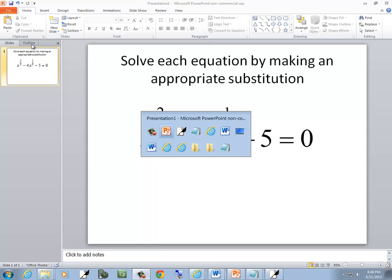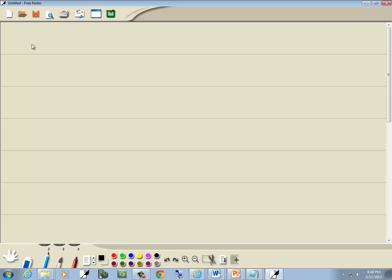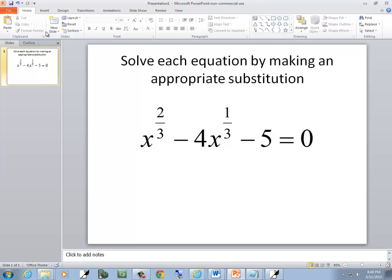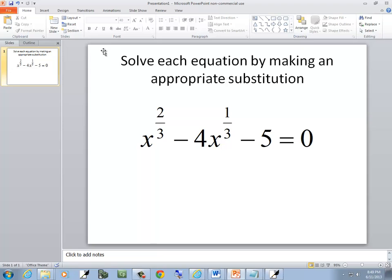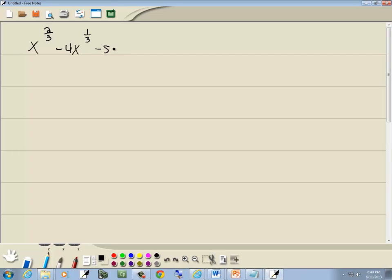Let's take a look at this equation. We've got x to the 2 thirds minus 4x to the 1 third minus 5 equal to 0.